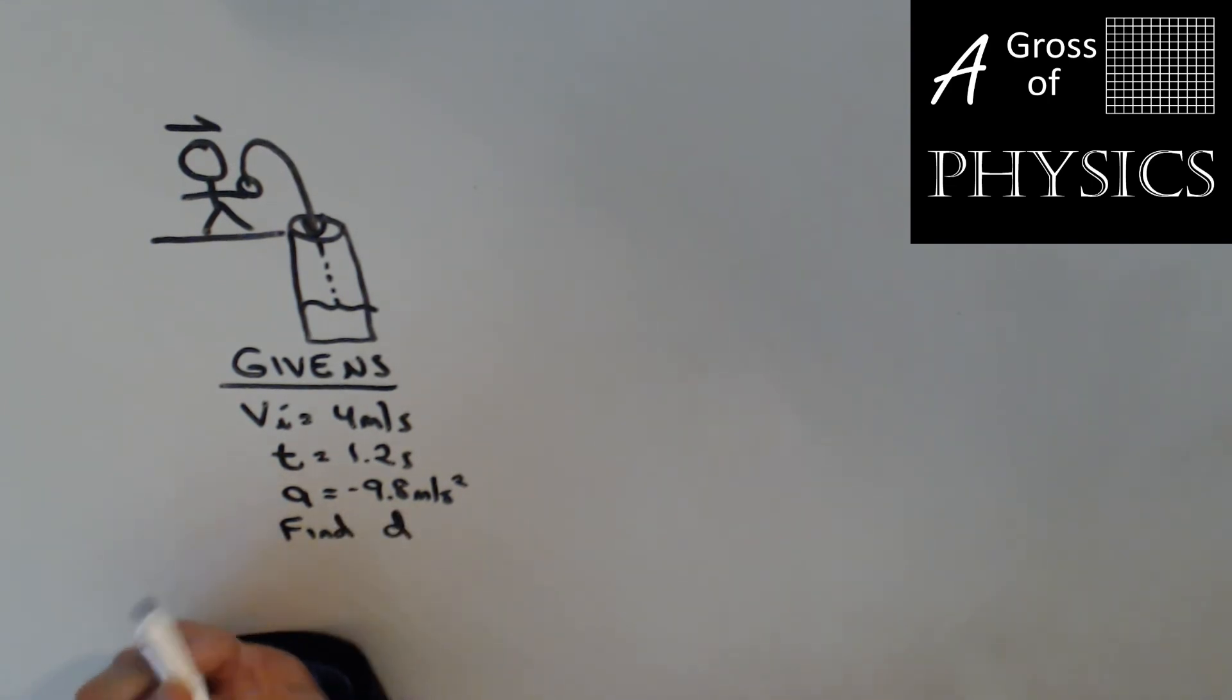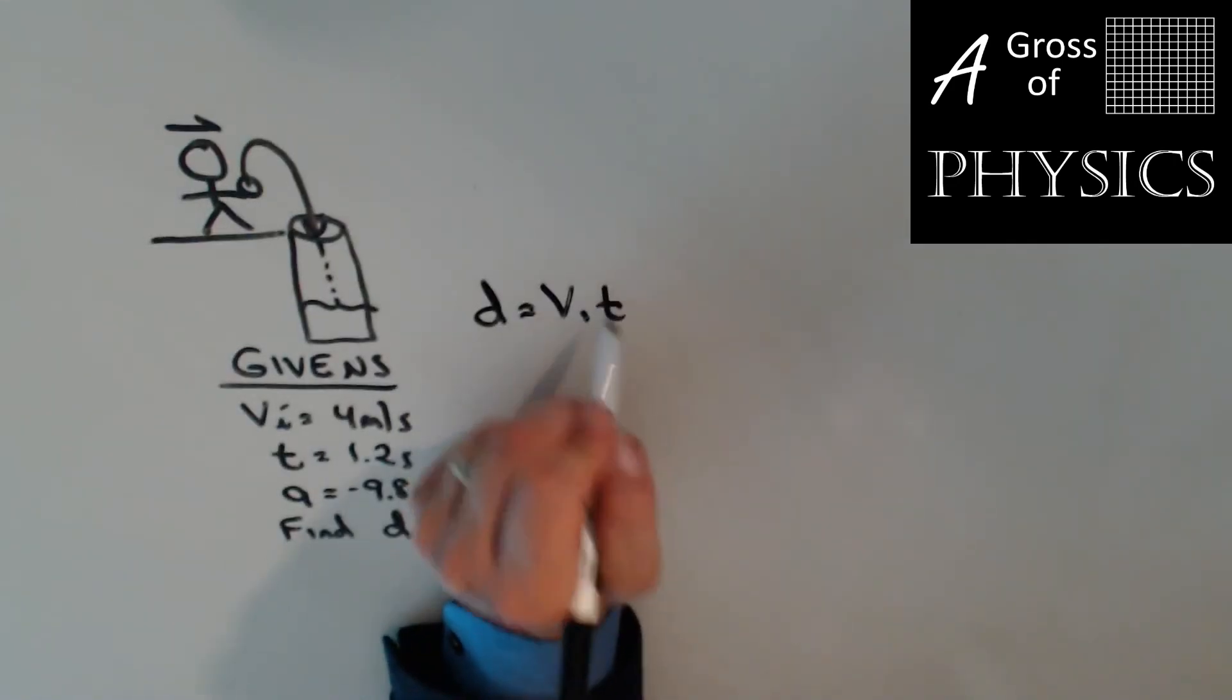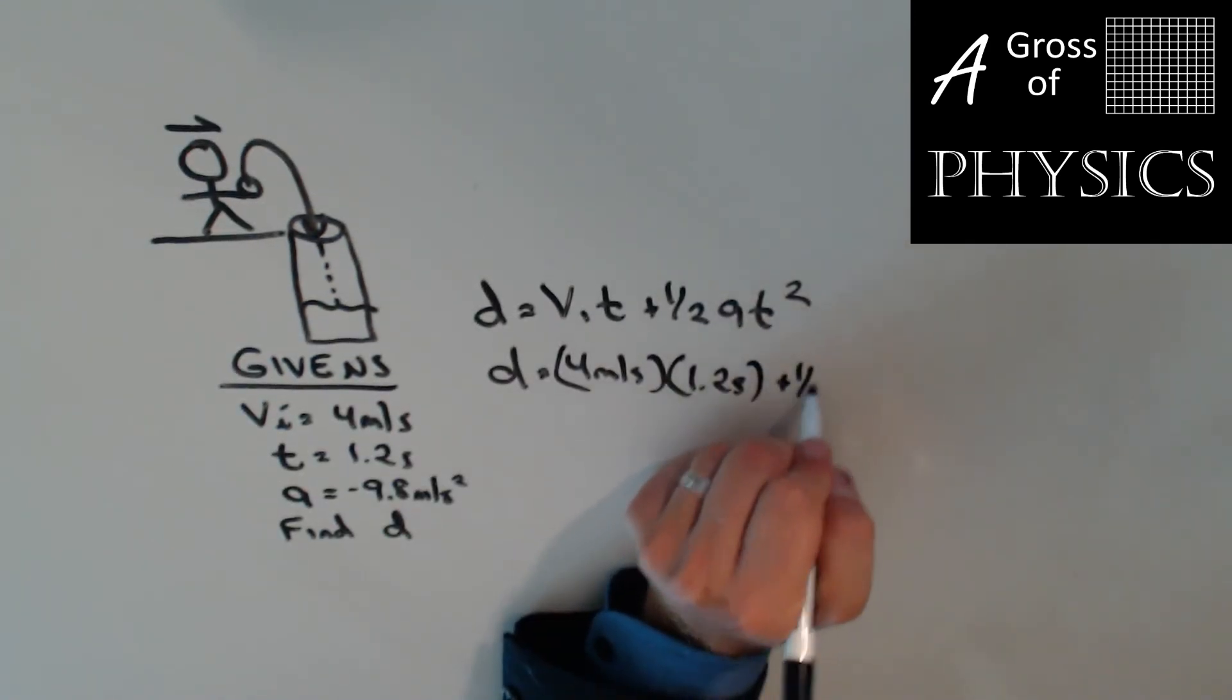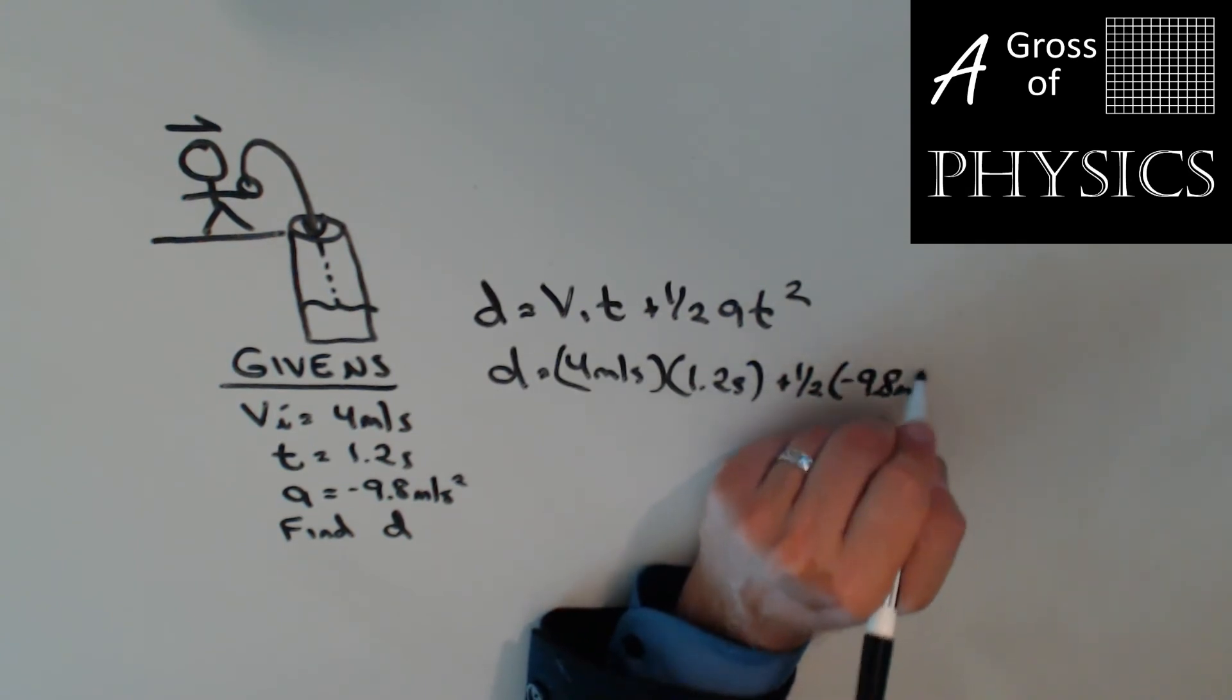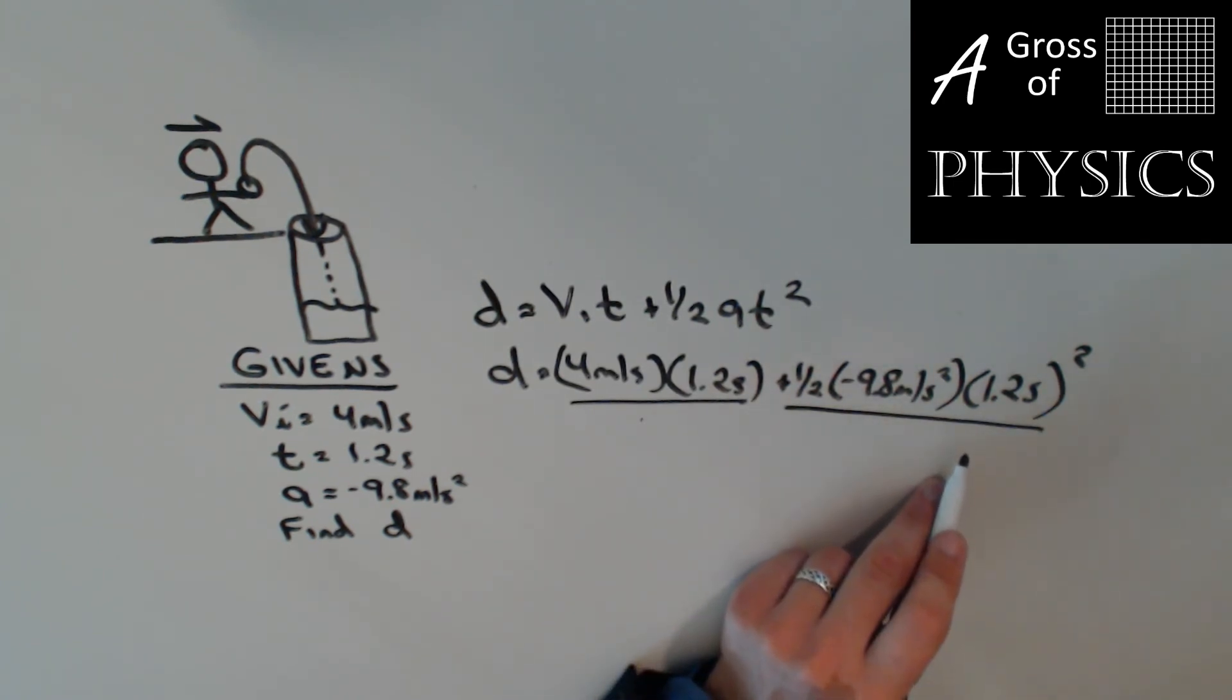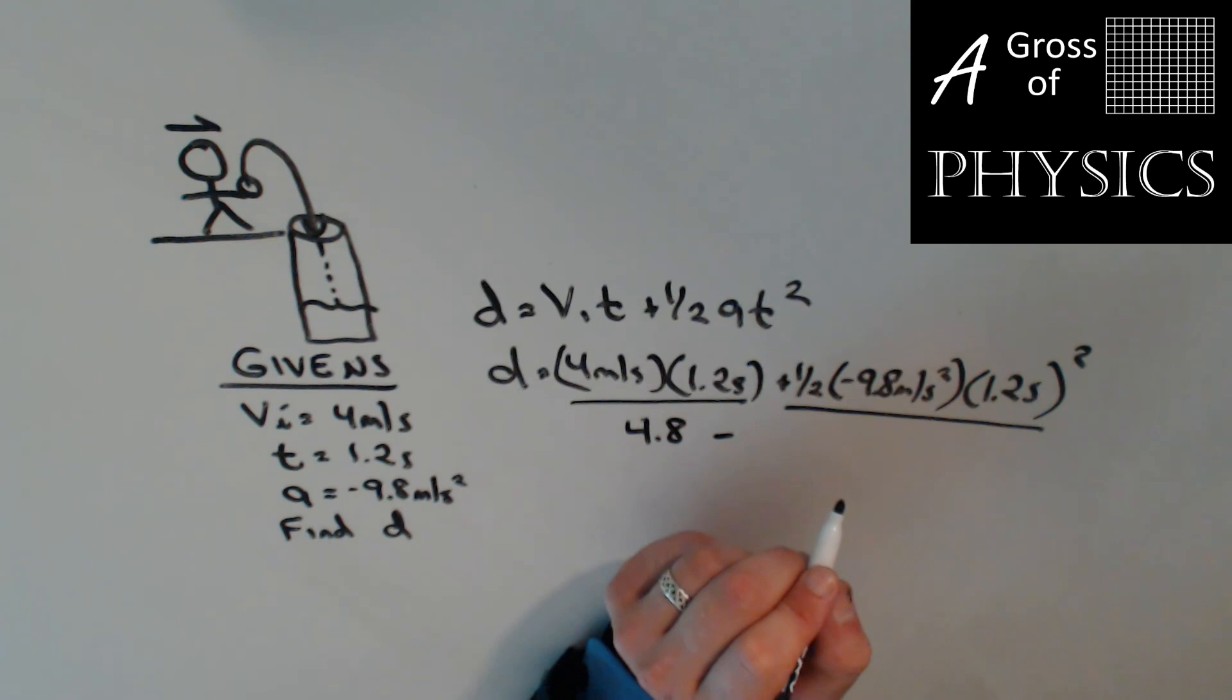This is equation four. D equals vi t plus one-half a t squared. D equals 4 meters per second times 1.2 seconds plus one-half negative 9.8 meters per second squared times 1.2 seconds squared. Don't forget the squared. Now, all we need to do is make sure we keep our terms orderly. We're going to have two terms here. One's going to be positive, one's going to be negative from the looks of it. Four times 1.2 is 4.8. Minus 0.5 times 9.8 times 1.2 squared, 7.056.